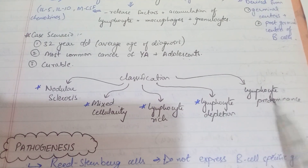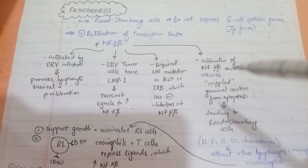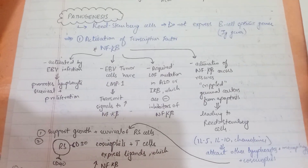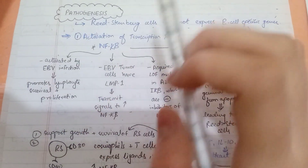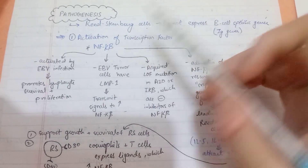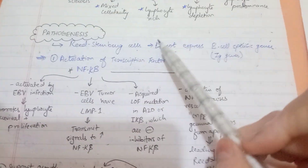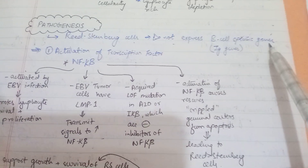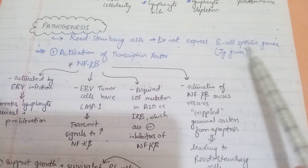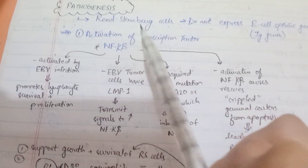Moving on to pathogenesis — how exactly is Hodgkin's lymphoma caused. Reed-Sternberg cells are derived from the germinal centers and post-germinal centers of B cells. They are essentially B cells, except they do not express B cell specific genes, making them non-functional with non-functional immunoglobulin genes.